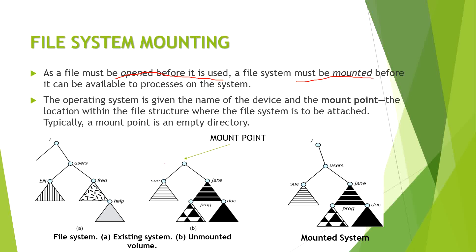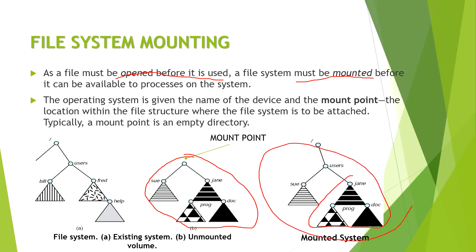Let's see an example. This is the computer system before mounting, and this is the unmounted volume. After we add this volume to the computer system, the system already has one user, and we will add another user, Jane, who has some files. This is the mounted system — this is how file mounting is done.